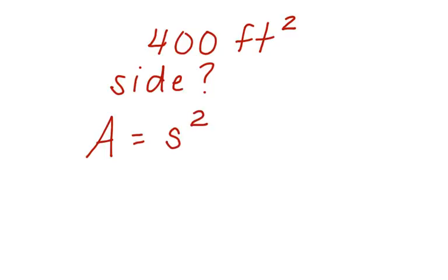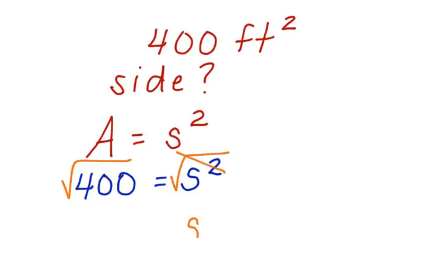Let's substitute in what we know. So, we know that the area is 400 feet, and we have equals side squared. Now, we can take the square root of both sides. These cancel, leaving S alone. The square root of 400 is 20. So the platform side length is going to equal 20 feet.